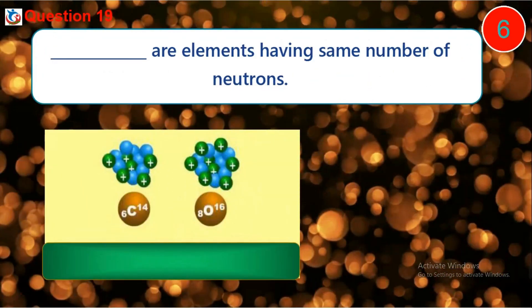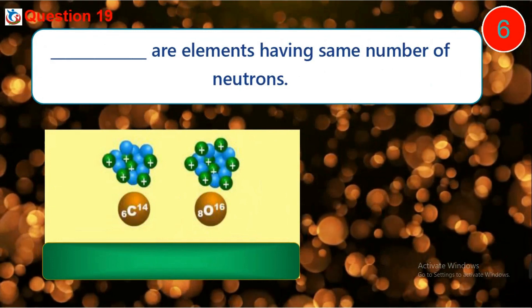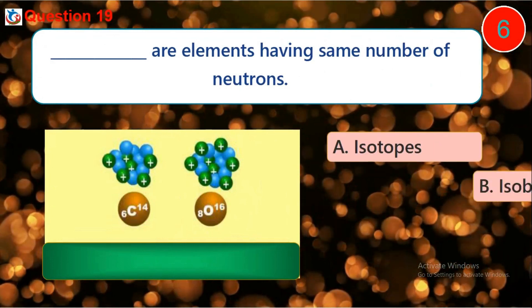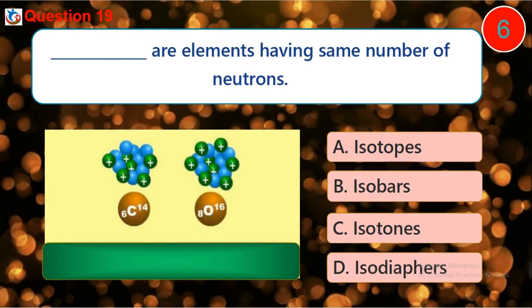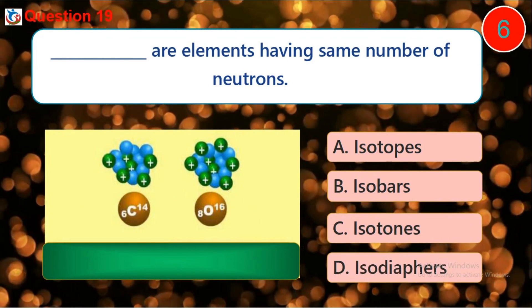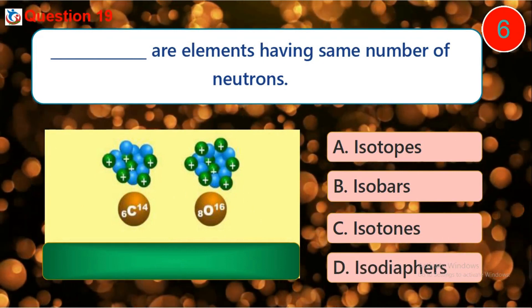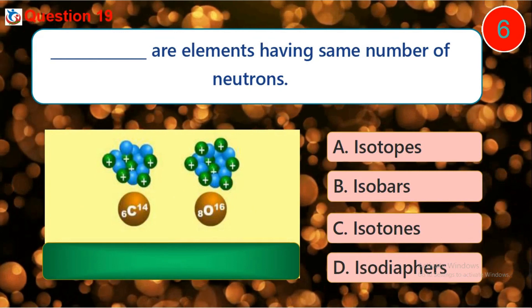Question nineteen: dash are elements having the same number of neutrons. A. isotons, B. isobars, C. isotones, D. isodiaphers.